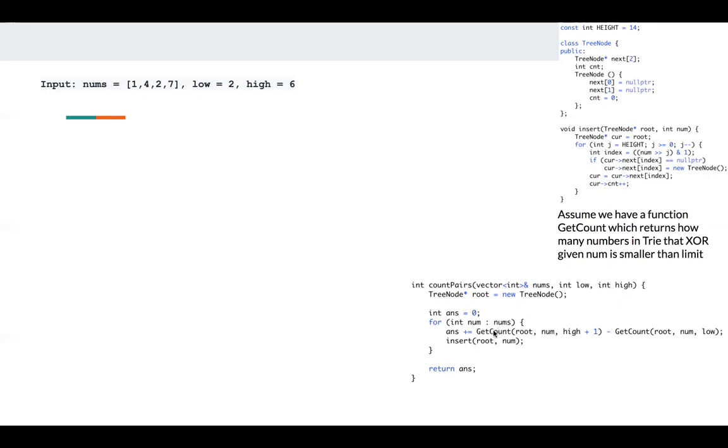Every time we calculate how many numbers in this Trie node XOR my num, then I just insert my num into my Trie. The most difficult part here is how to implement the getCount function.